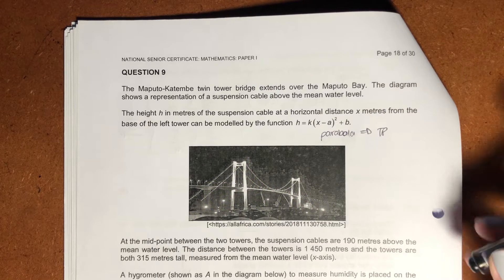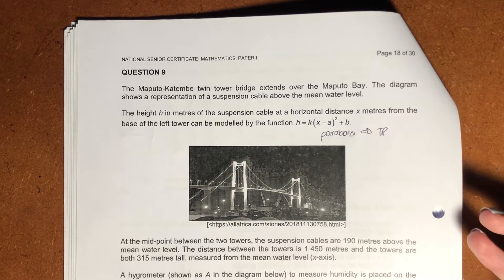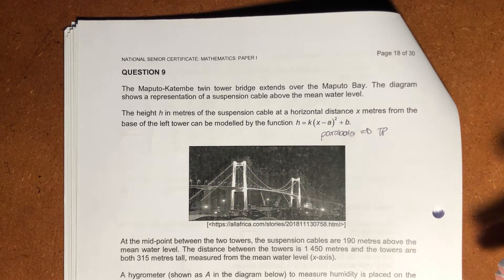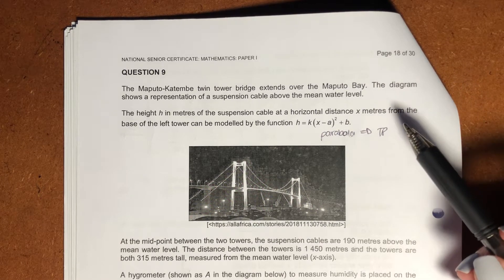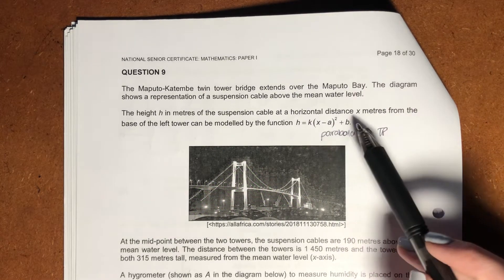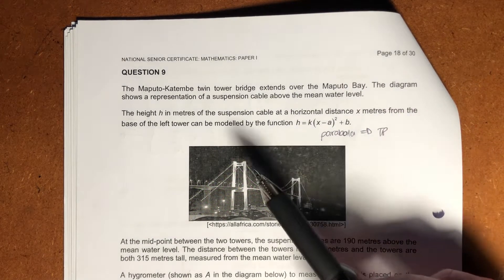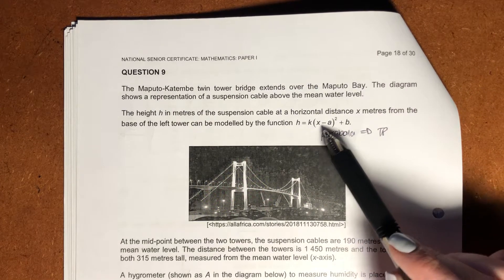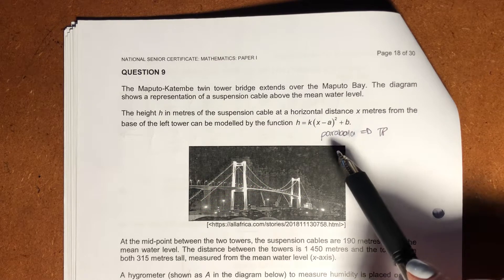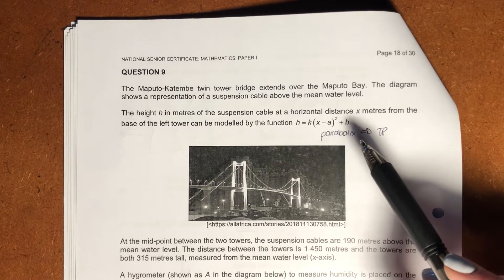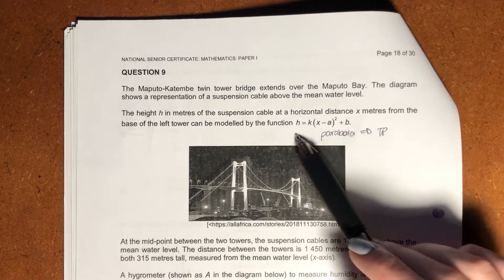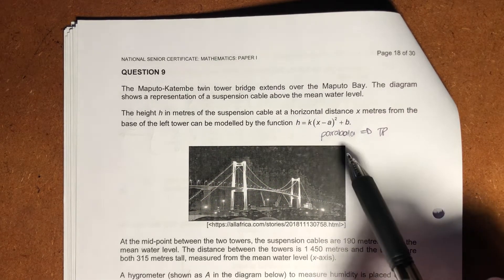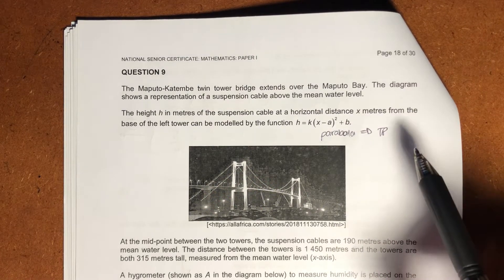So it says the Maputo-Katembe Twin Tower Bridge extends over the Maputo Bay. The diagram shows a representation of a suspension cable above the mean water level. The height h in meters of the suspension cable at a horizontal distance x meters from the base of the left tower can be modeled by the function h equals k times x minus a all squared plus b. So you should be thinking to yourself, oh, there's a theory that I need to know. It's a parabola, right? But instead of the y variable, we're using h instead. Okay, and this form of the parabola is my turning point form.